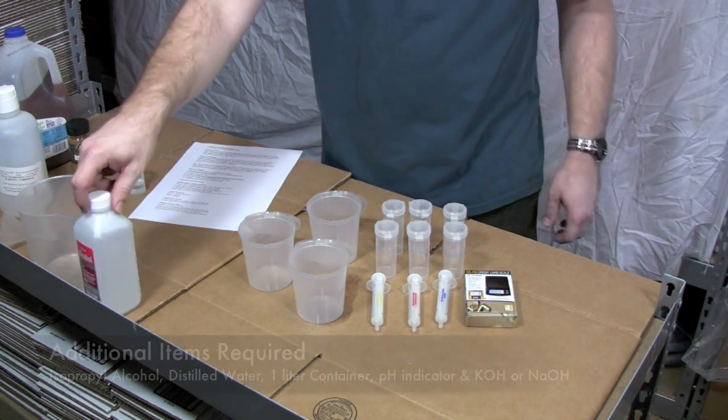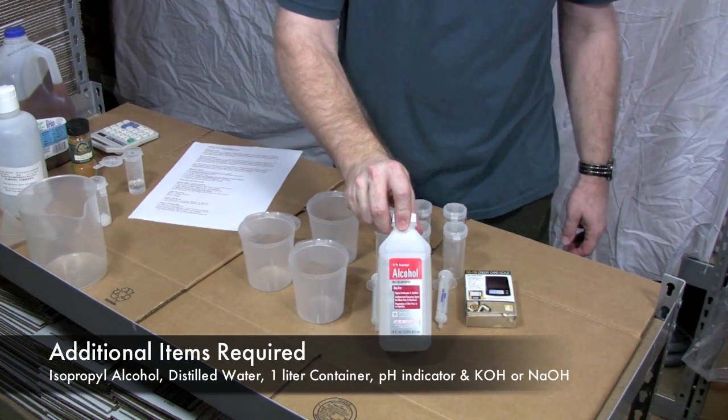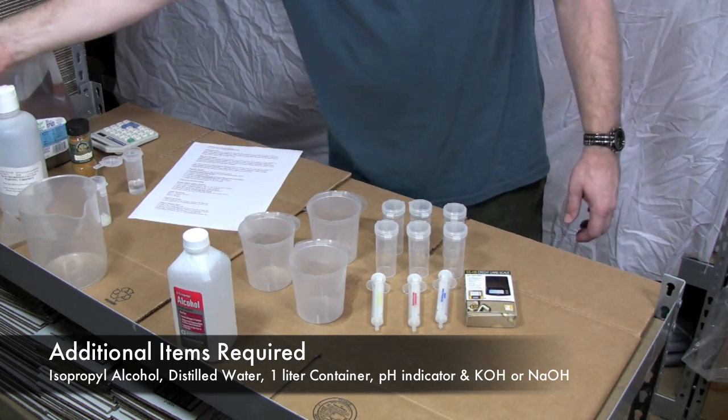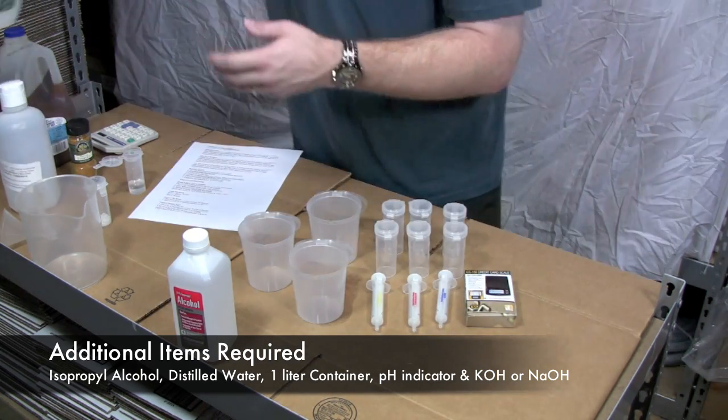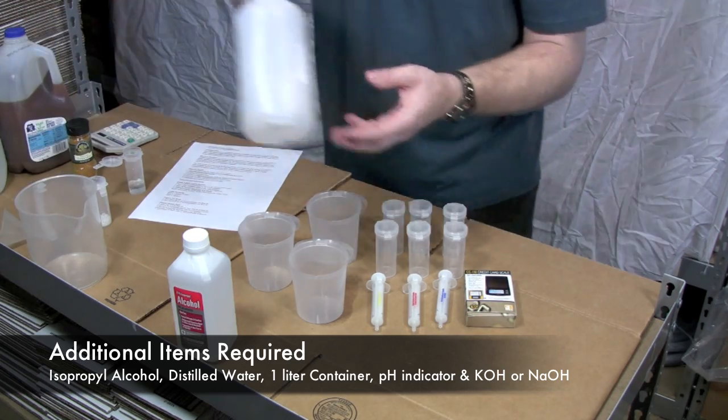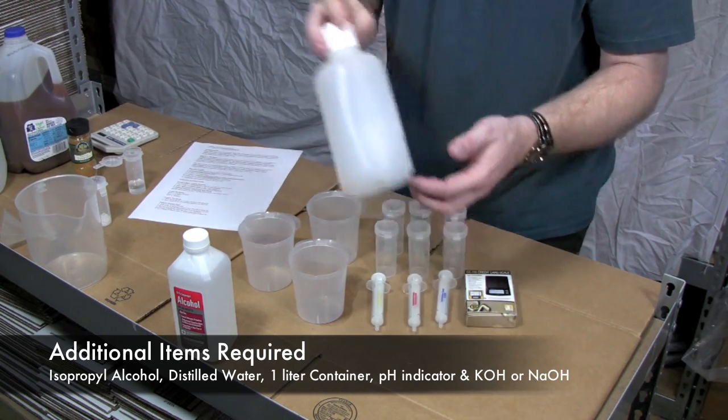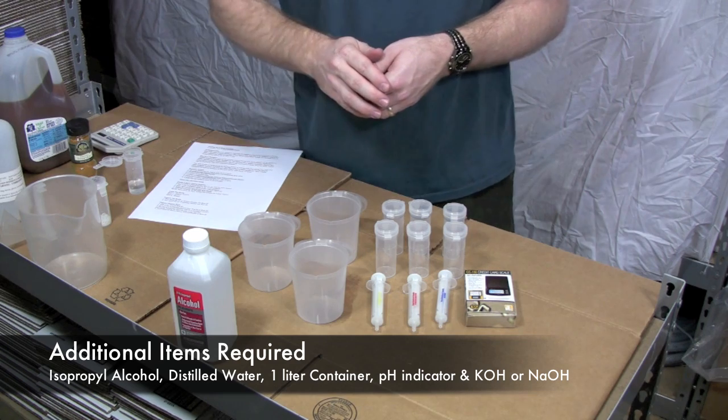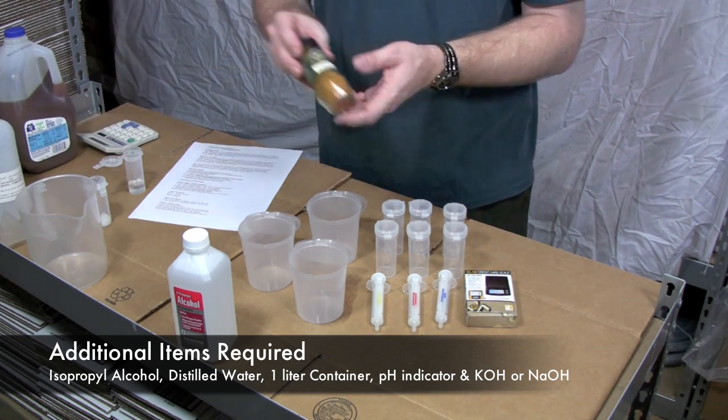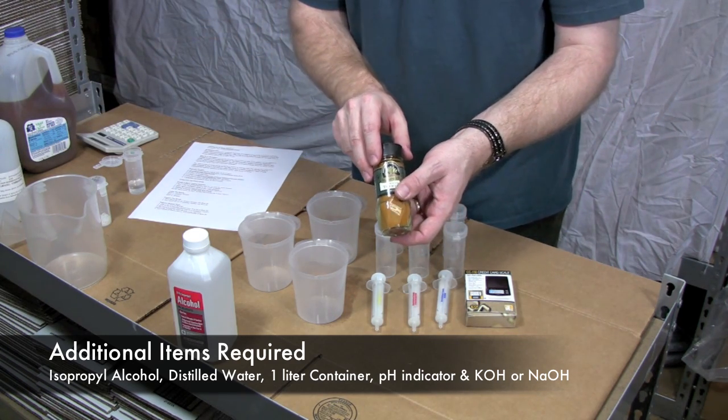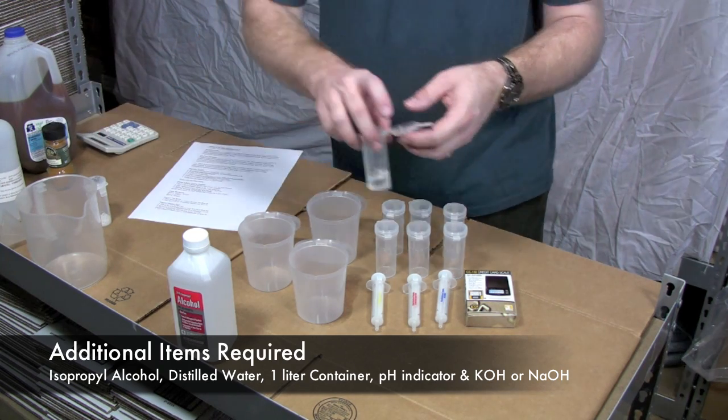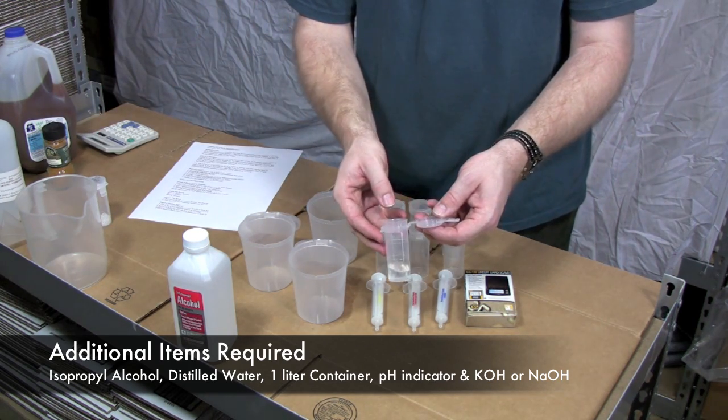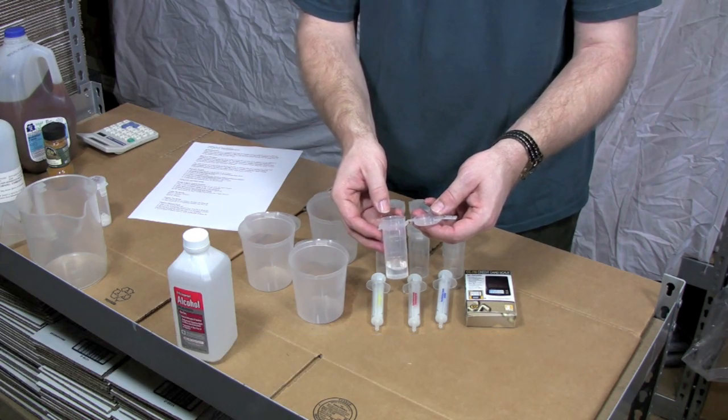What you'll need to purchase in addition to this kit is some isopropyl alcohol, some distilled water and a container that can hold one liter of water. You'll also need for a pH testing solution either turmeric powder that you can pick up at a grocery store or phenolphthalein that you can purchase online through Utah Biodiesel Supply or other vendors. You can also use phenol red.